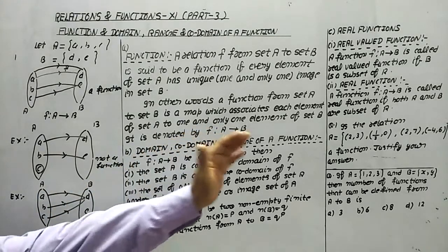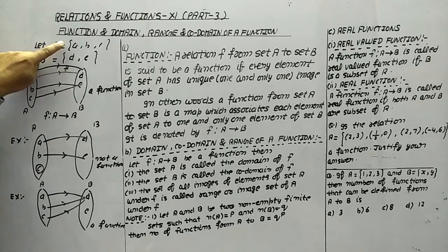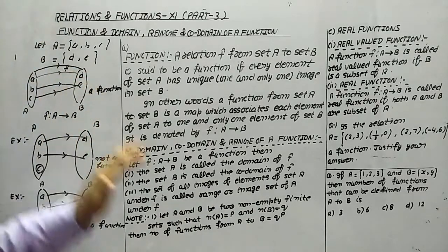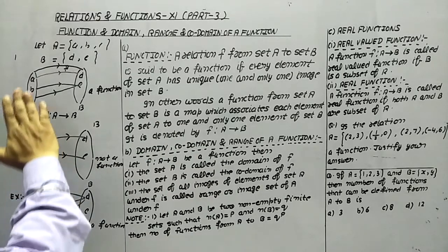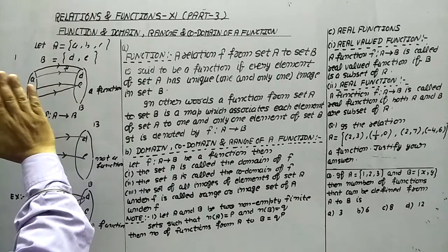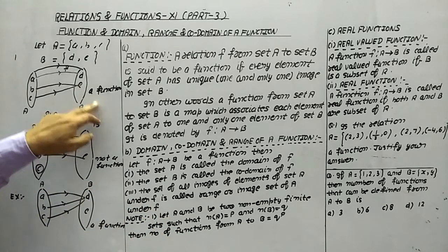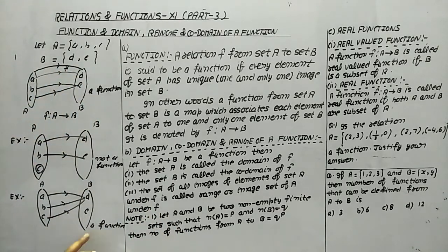Now, domain, co-domain, and range of a function. The whole first set A is known as the domain. The second set B is known as the co-domain. And all the elements which are used for mapping from set B are known as the range. In the first example, what is the range? D and E. In the next example, what is the range? D and E.